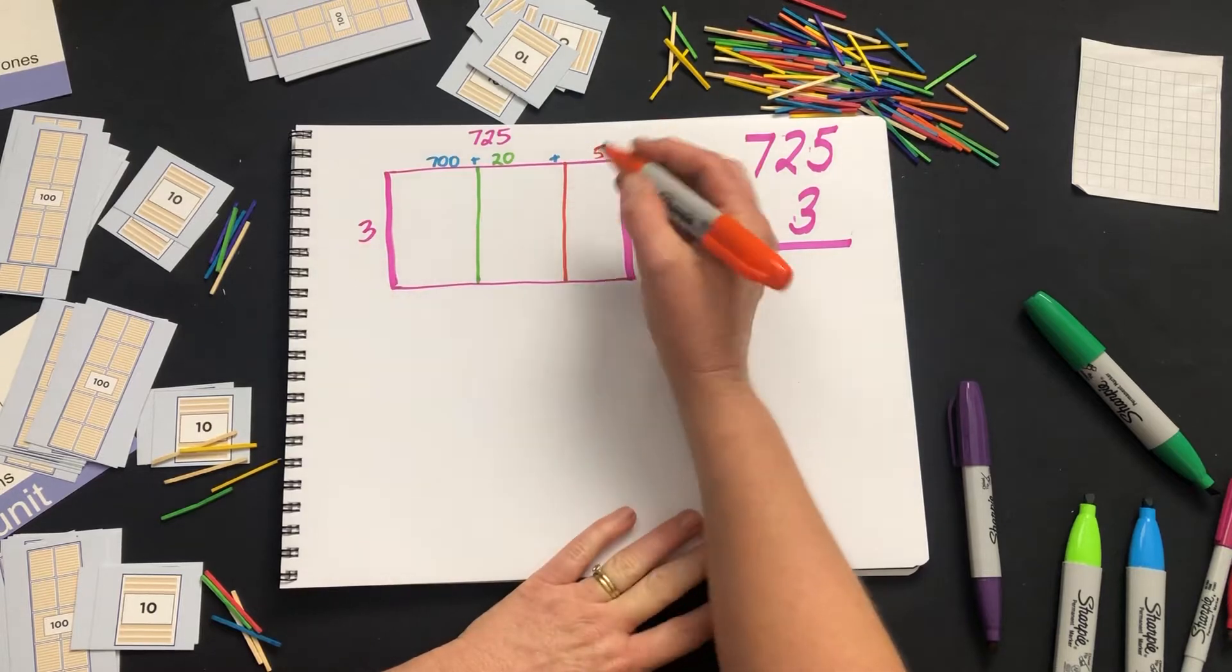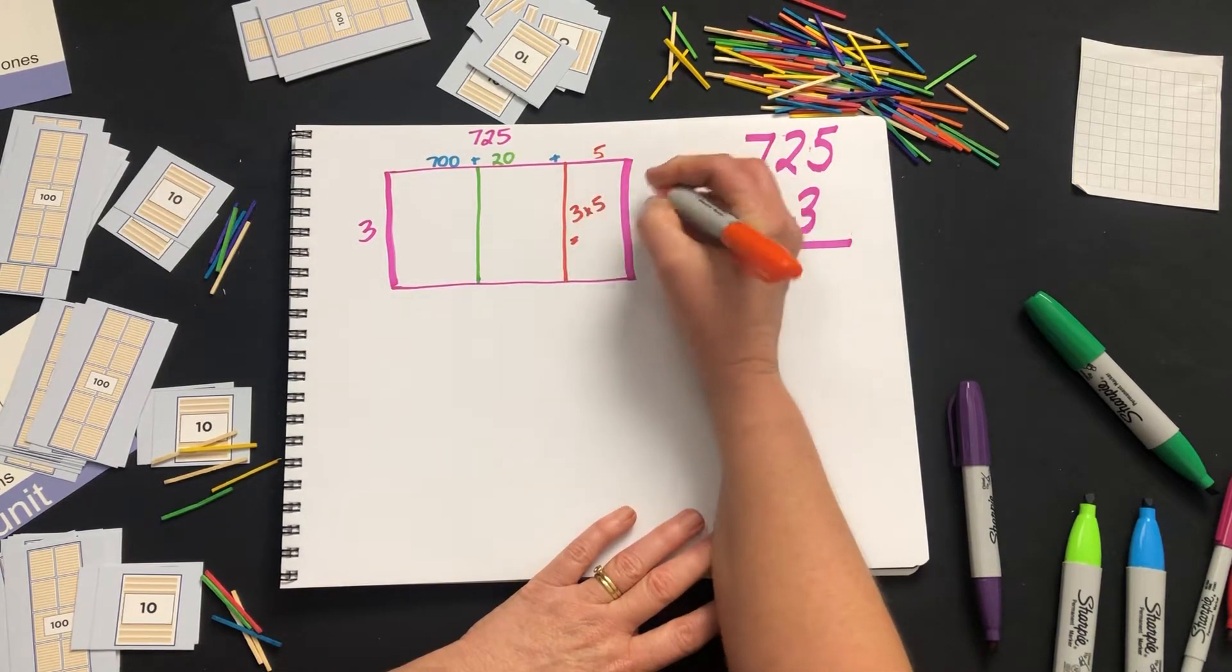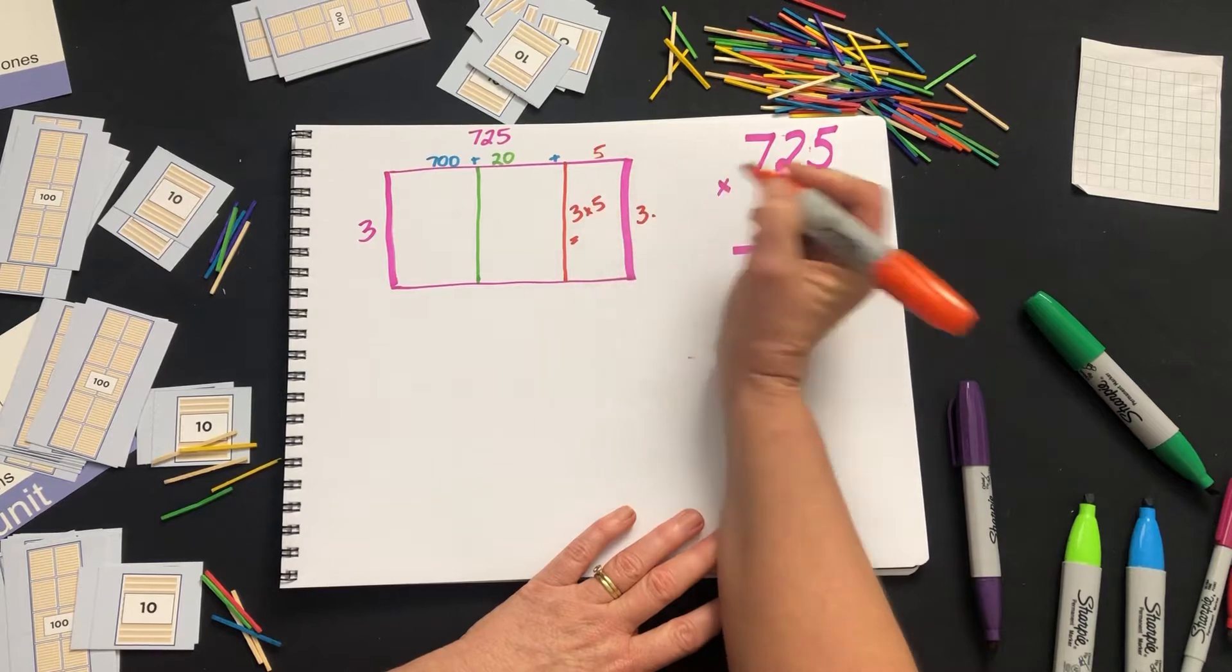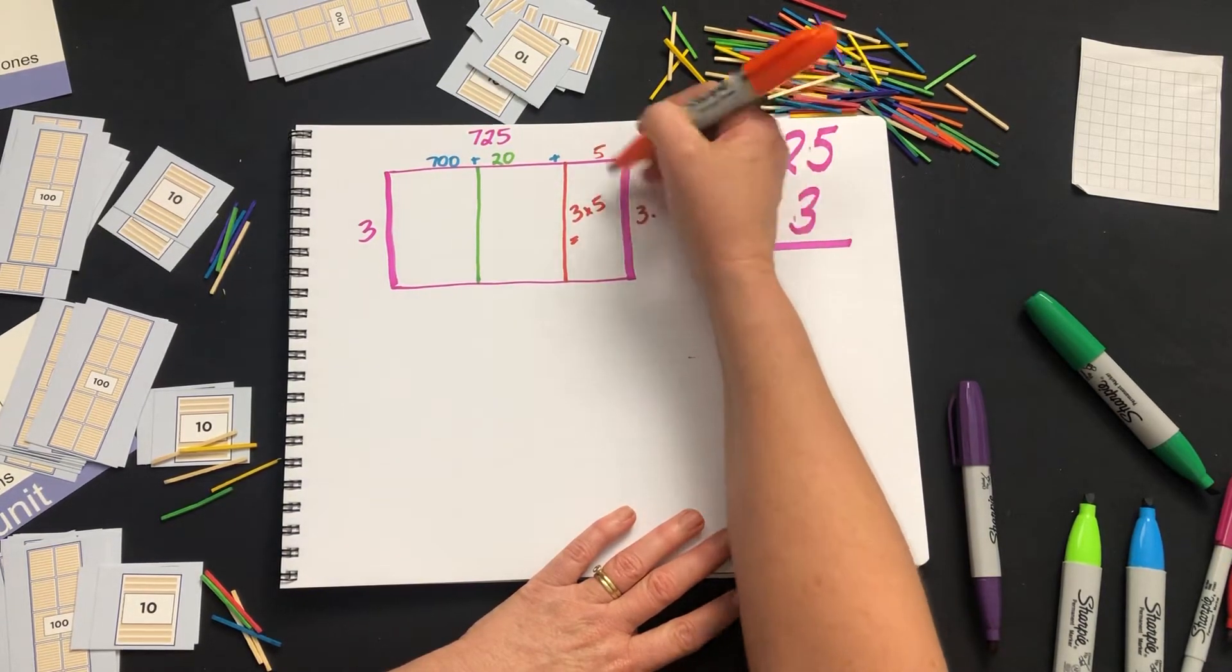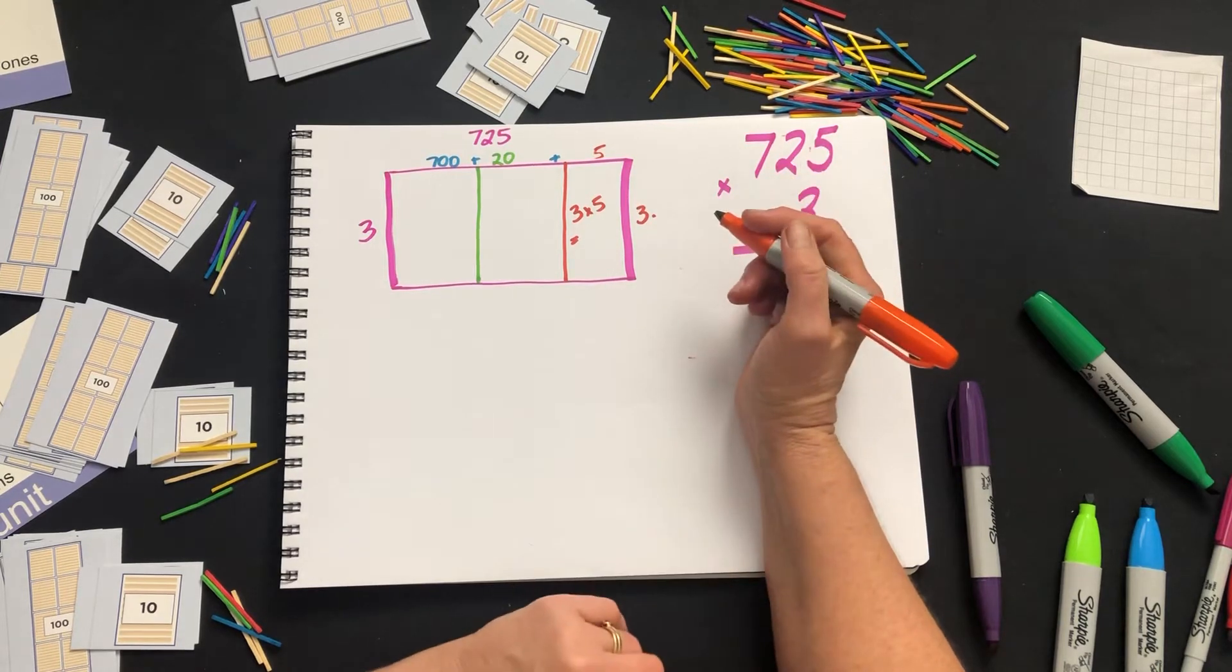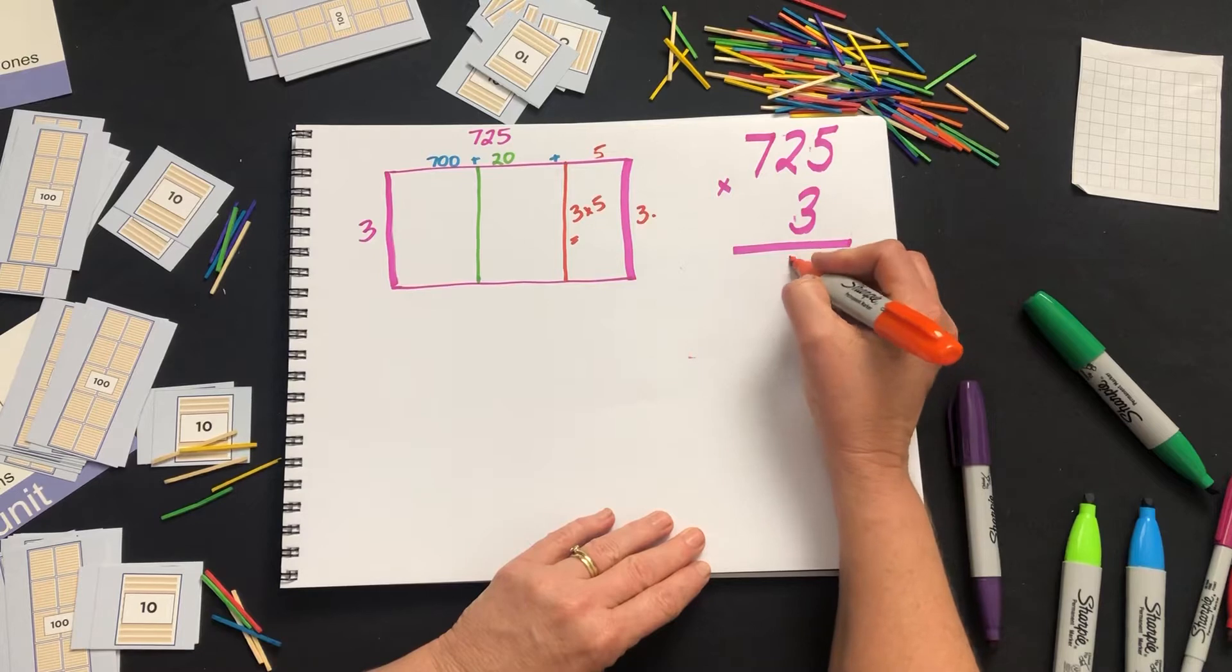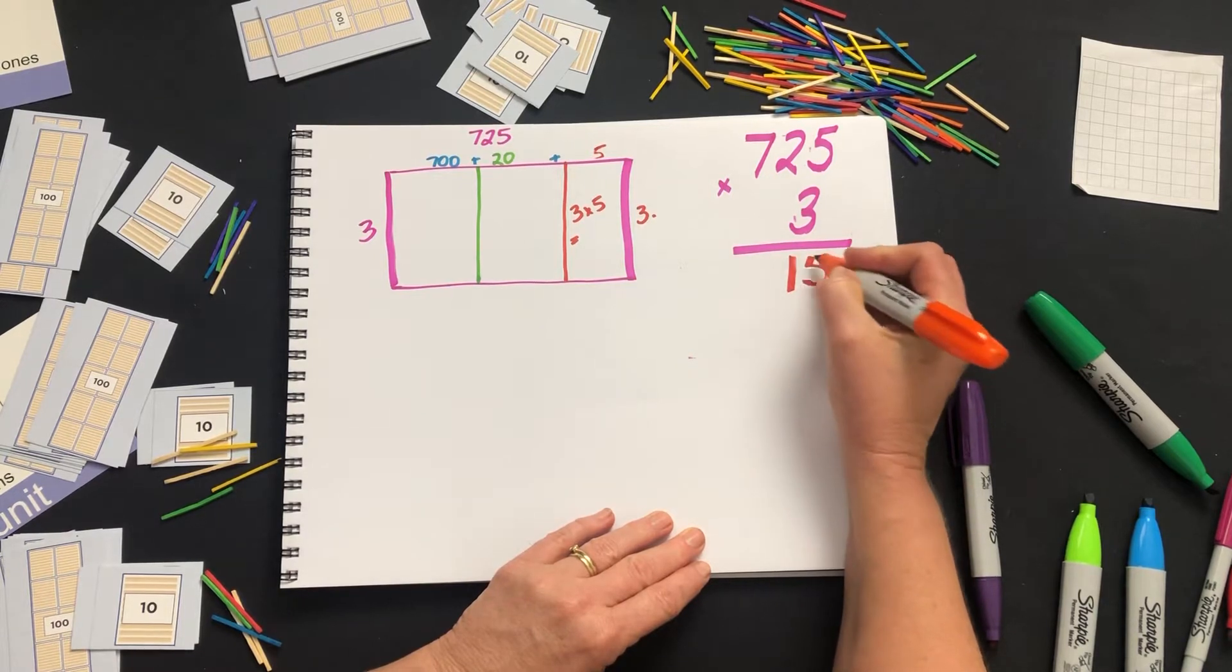So 3 times 5 is our first rectangle. You may want to put 3 over this side as well where it's closer so the student can see it. If you need to use grid, you could use grid under there as well. But 3 times 5 is 15, so I write that down.